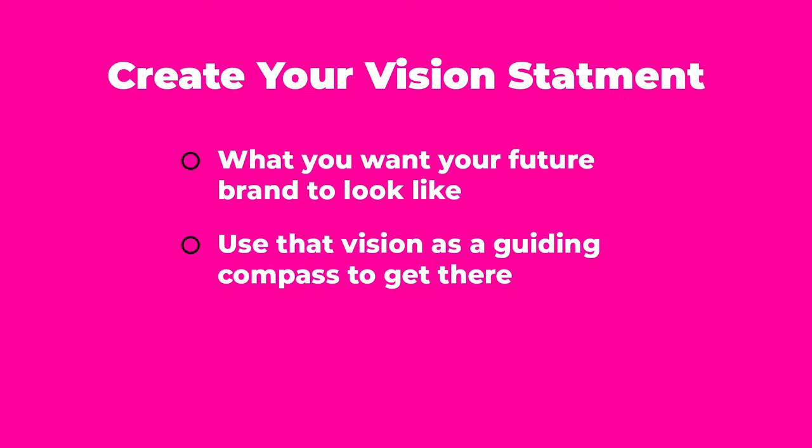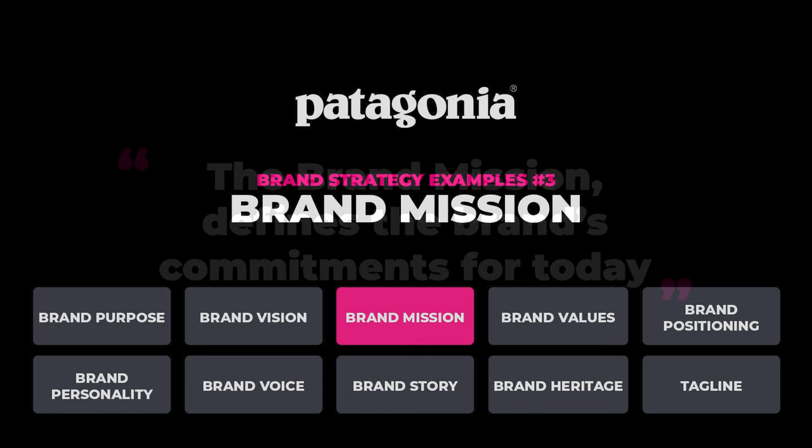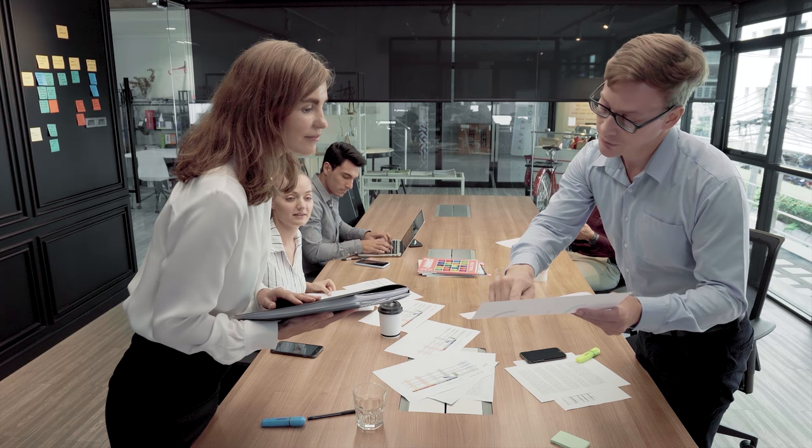Brand strategy example number three is Patagonia with their brand mission. While the brand vision outlines the aspirations of the brand for the future, the brand mission defines the brand's commitments today. The goal of the brand mission is to define that commitment, documented in a brand mission statement which, like the vision statement, is an internal document. The mission provides clarity for brand leaders and personnel about the consistent commitments it must deliver on to achieve that vision. When a brand is clear on its commitment, it shows up in its actions and forms part of that brand's reputation.